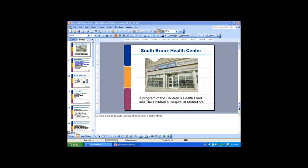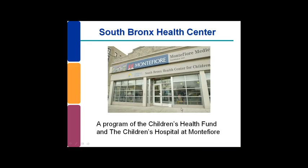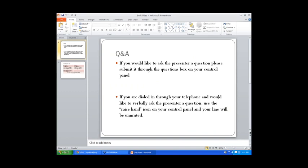We are now going to take a few questions. If you have any questions, please type them into the Q&A box on your screen. If you would like to ask a question live, feel free to use the raise hand feature. The first question is to any of the presenters: on average, how long does it take to get newly diagnosed type 2 diabetic patients to get their A1C under control? What's the average time period?